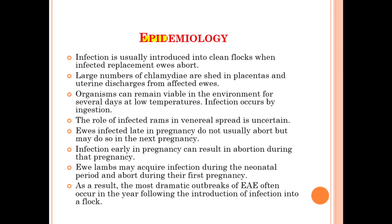Moving to the epidemiology of enzootic abortion of the ewes: the infection is usually introduced into clean flocks when infected replacement ewes abort. Large numbers of Chlamydophila are shed in the placentas and uterine discharges from affected ewes. The organisms can remain viable in the environment for several days at low temperature, and infection occurs by ingestion.